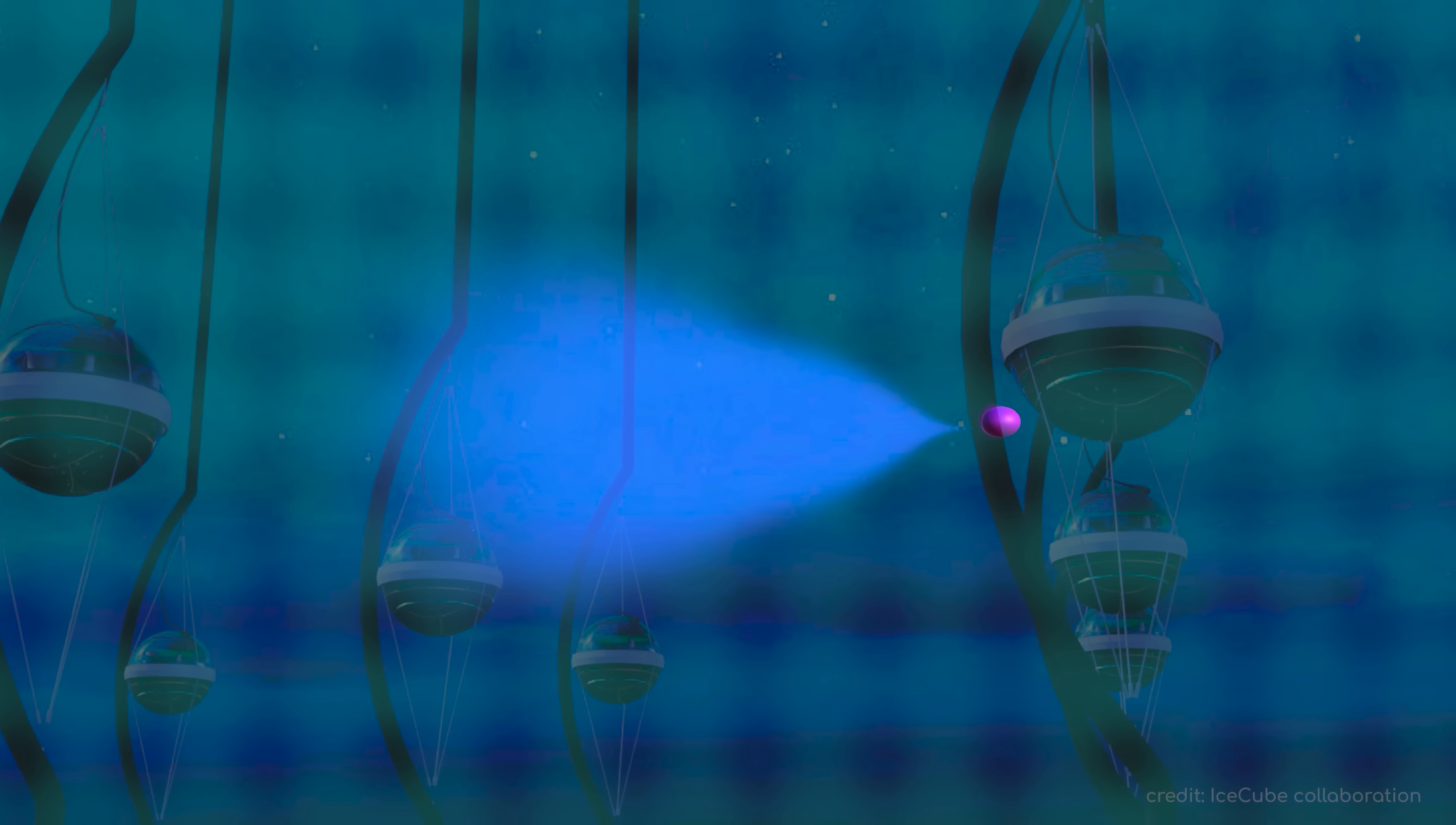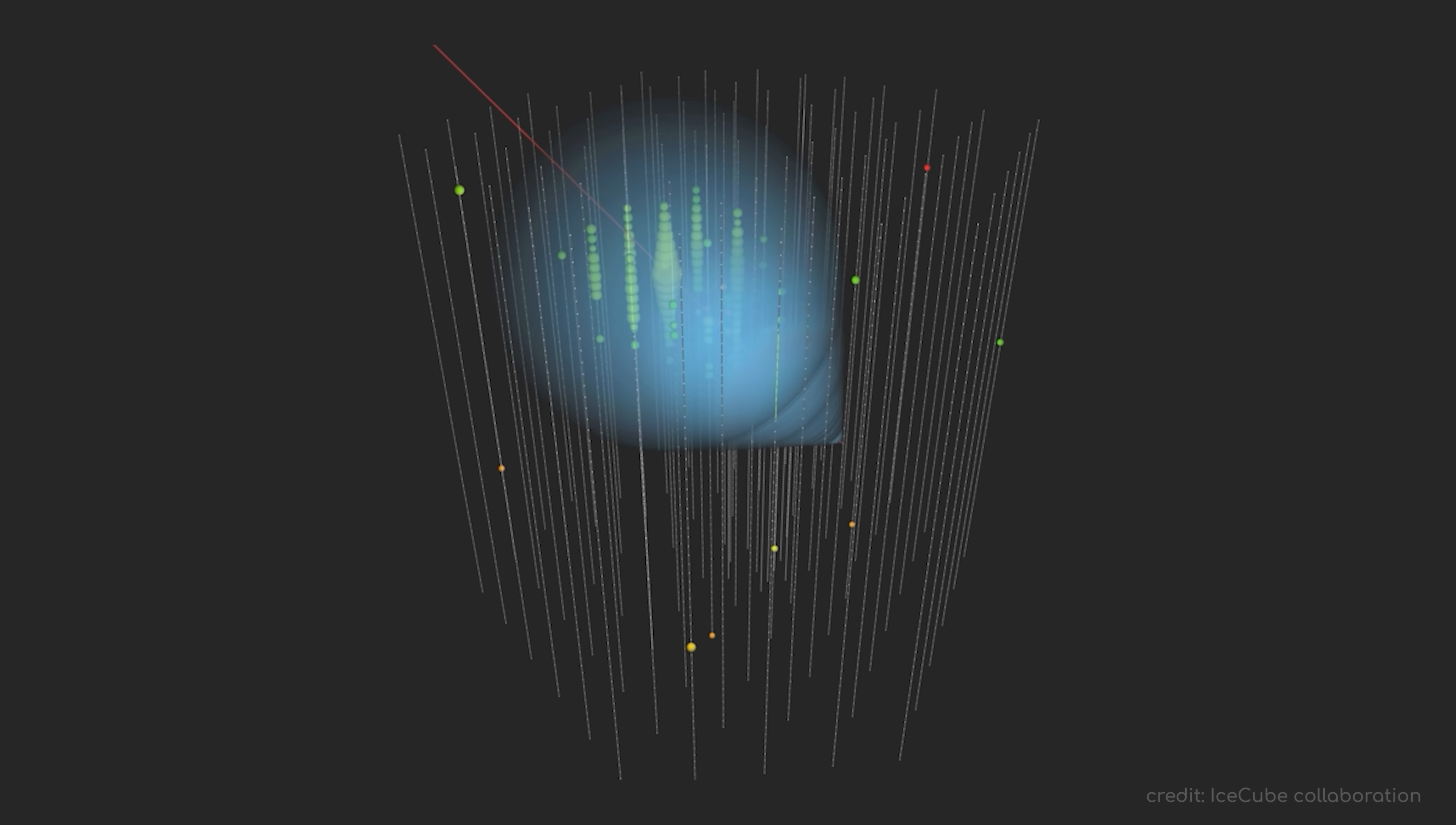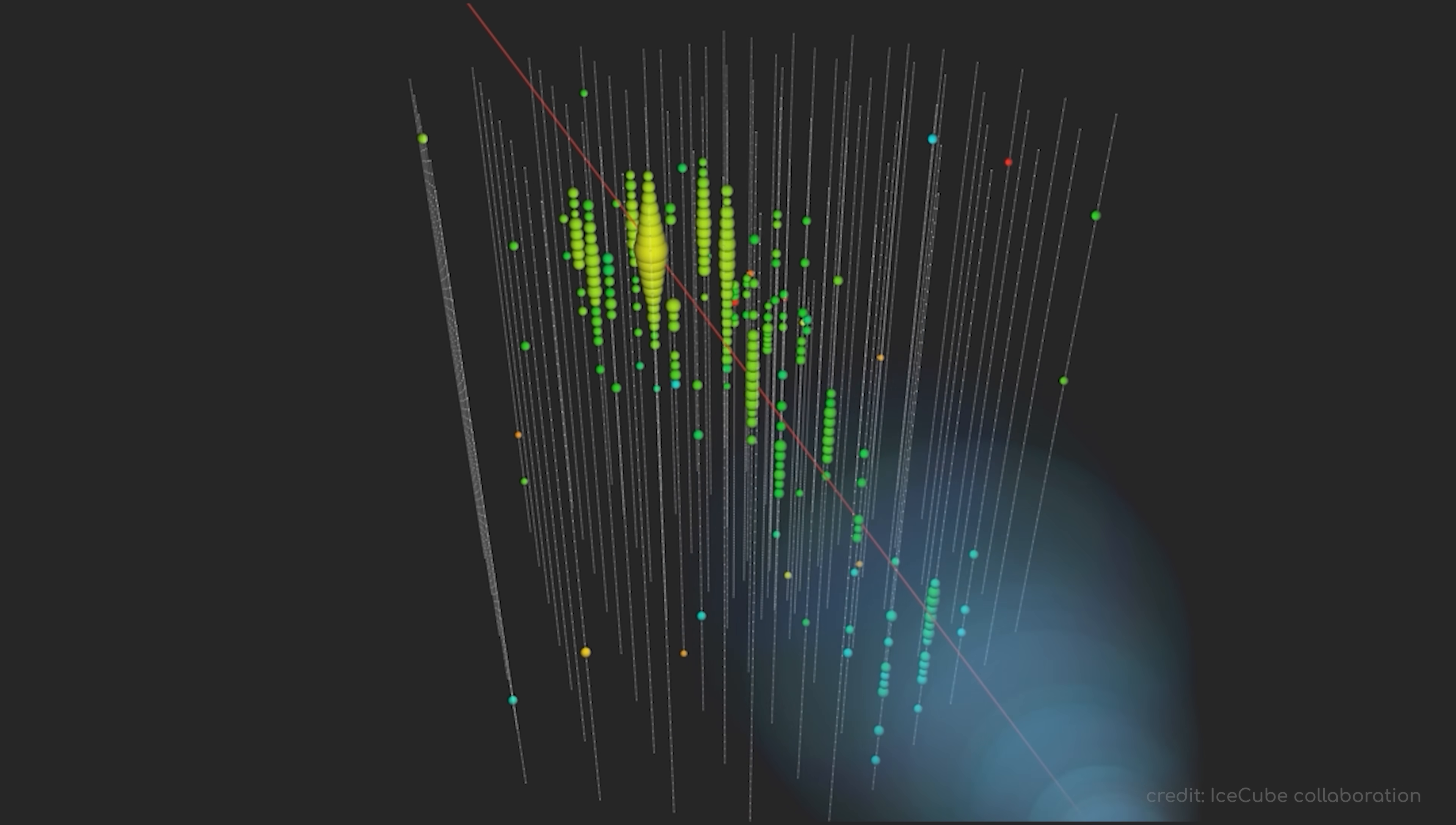The thousands of digital optical modules of IceCube are primed to detect this signature blue light flashing through the ice. The minuscule differences between when one DOM registers the flash and when the neighboring DOMs detect it allow scientists to triangulate the neutrino and trace its path back through the ice, and ultimately through the universe to its origin.